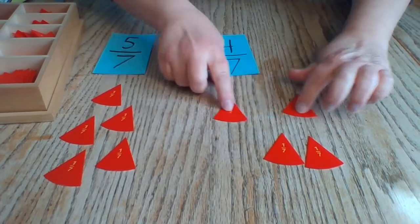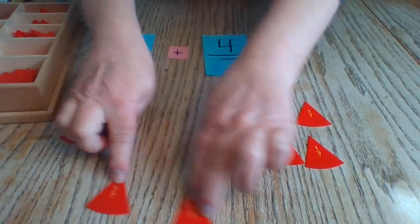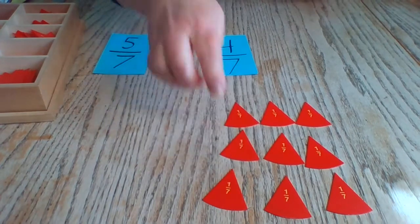When we add five-sevenths and four-sevenths, we get how many? One, two, three, four, five, six, seven, eight, nine-sevenths.